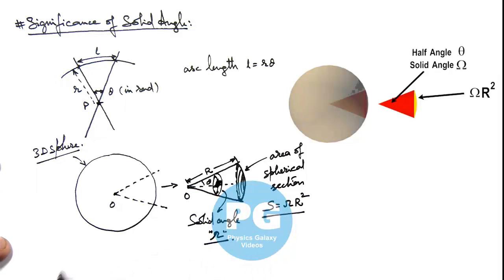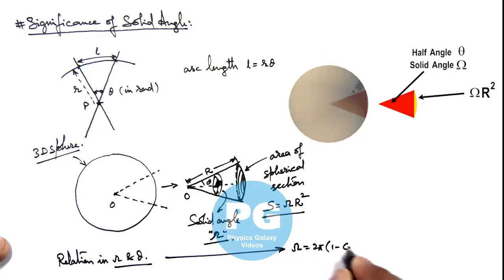And if we talk about the relation in omega and theta, this relation is directly given as omega is equal to 2 pi 1 minus cos theta.